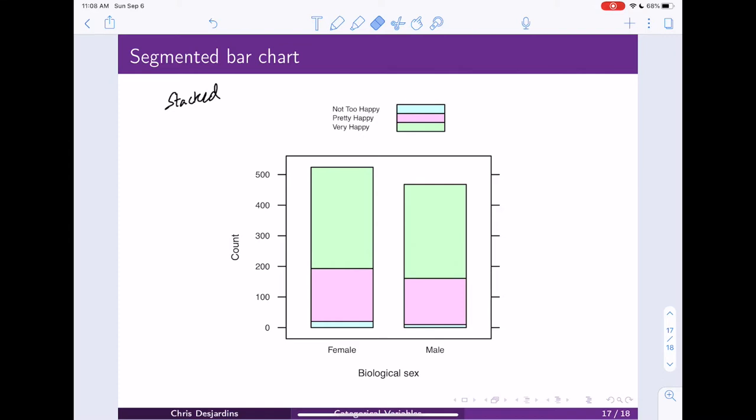So these segmented bar charts are helpful, or stacked bar charts are helpful when you have a few number of categories. When you have many numbers of categories, this becomes a little bit more difficult.